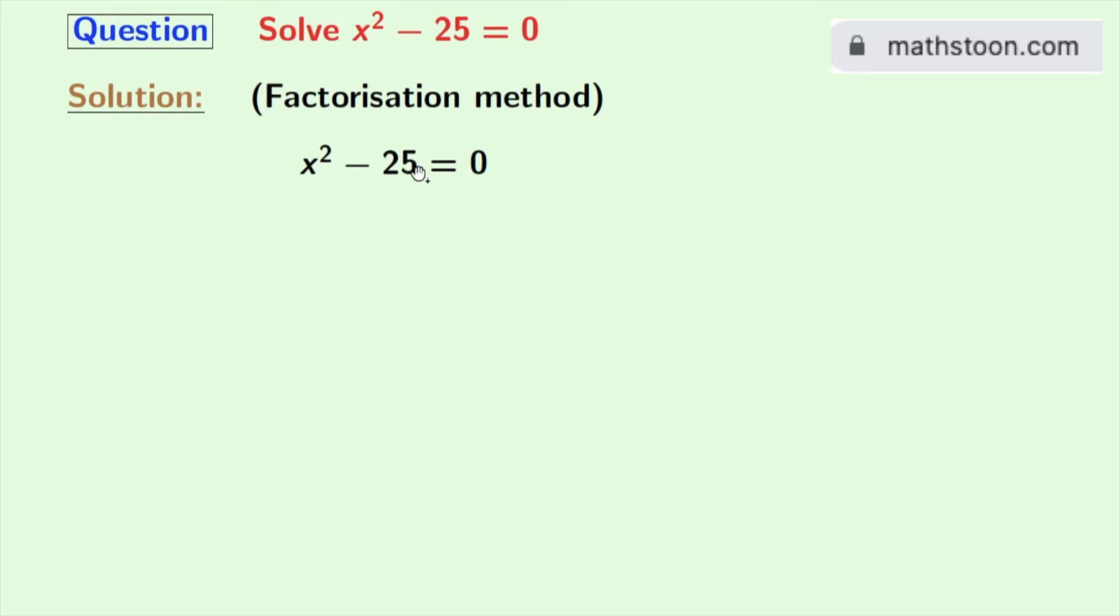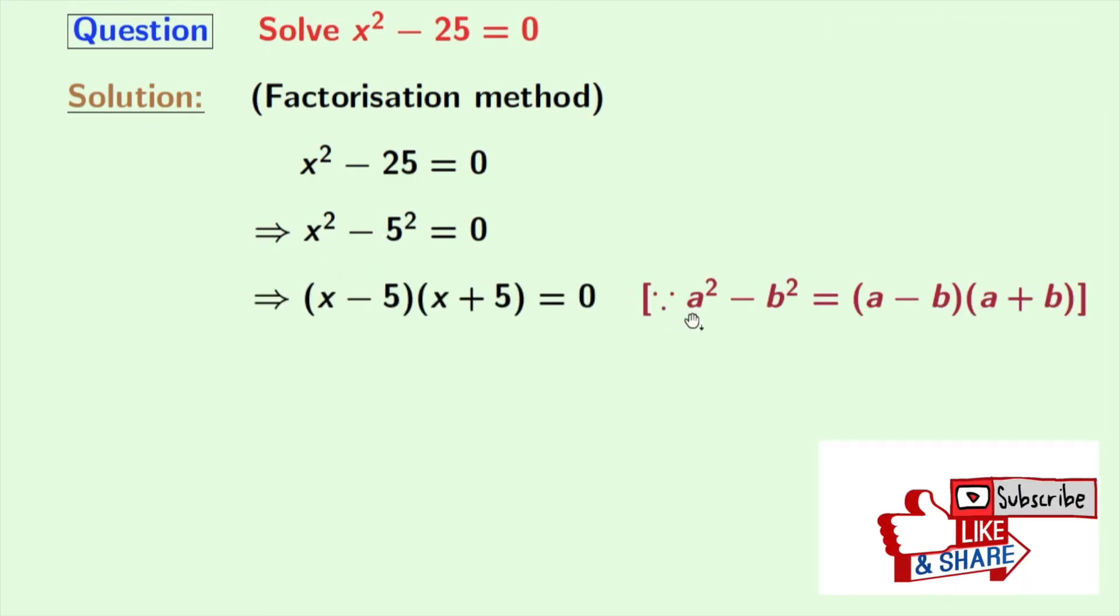As 25 can be written as 5 square, so we will derive this as x square minus 5 square is equal to 0. Look that this is in the form of a square minus b square, where a is x and b is 5. So we can easily apply the formula of a square minus b square here.